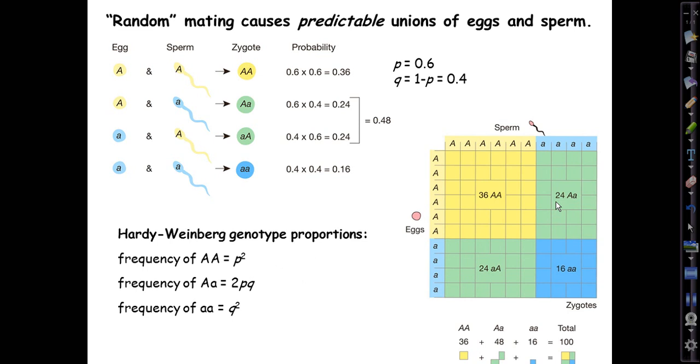We expect 48 of them to be big A, little a heterozygotes. We'll get 24 where the egg was big A and the sperm was little a, p times q, and we'll get 24 that are the other way around, little a big A sperm, q times p, also 0.24. So, out of 100, that would be 24 of them in expectation. And finally, the little a homozygotes, 0.4 times 0.4. There are expected to be 16 of them, and Heron and Freeman artfully diagram that process this way, showing these colored squares with the areas proportional to their expected frequencies in the population.